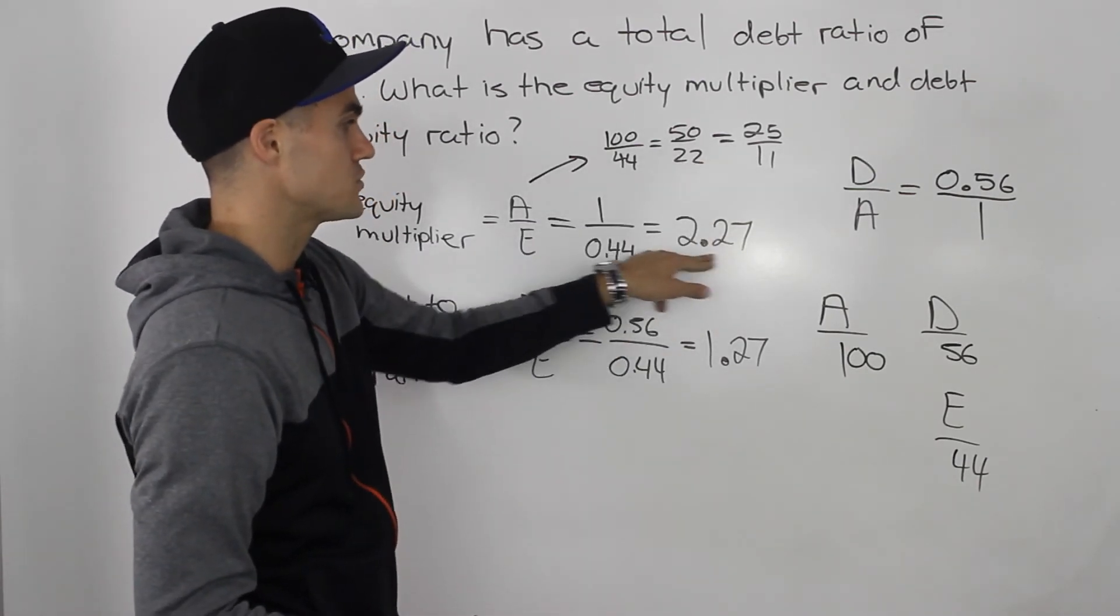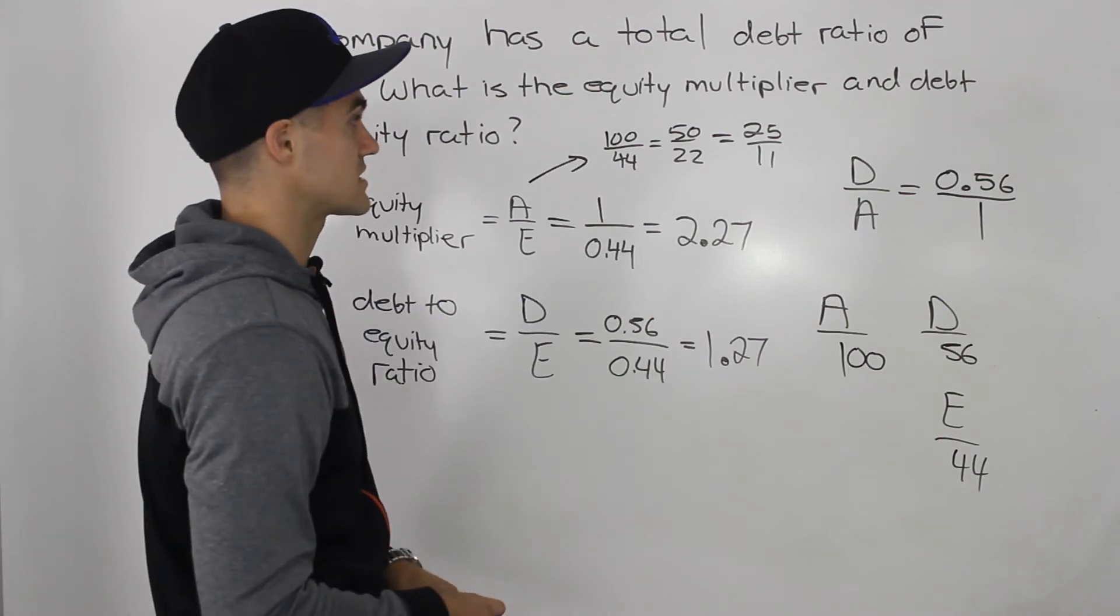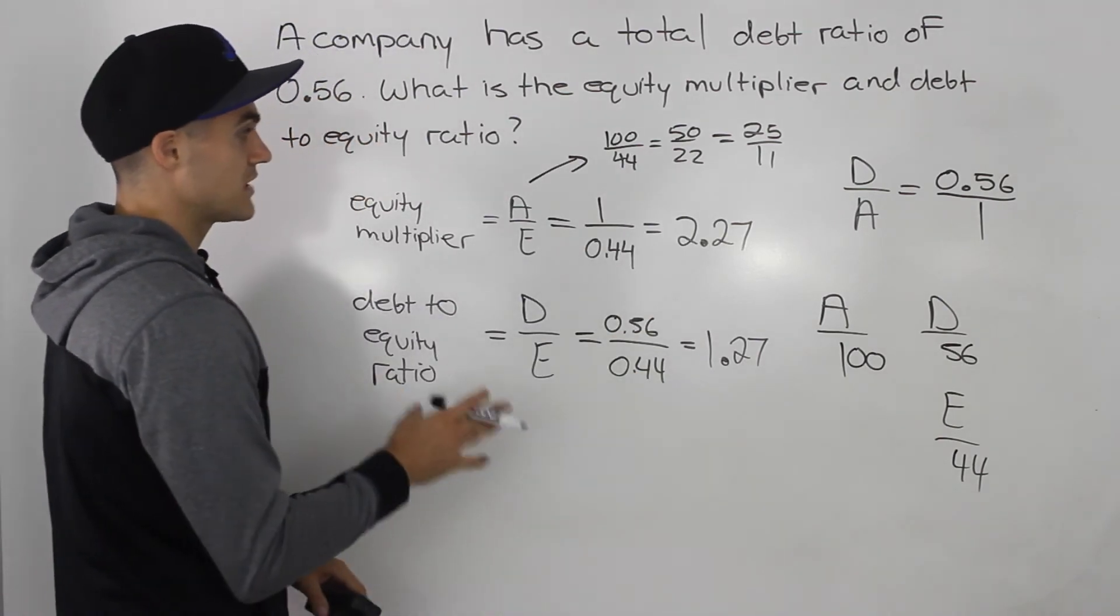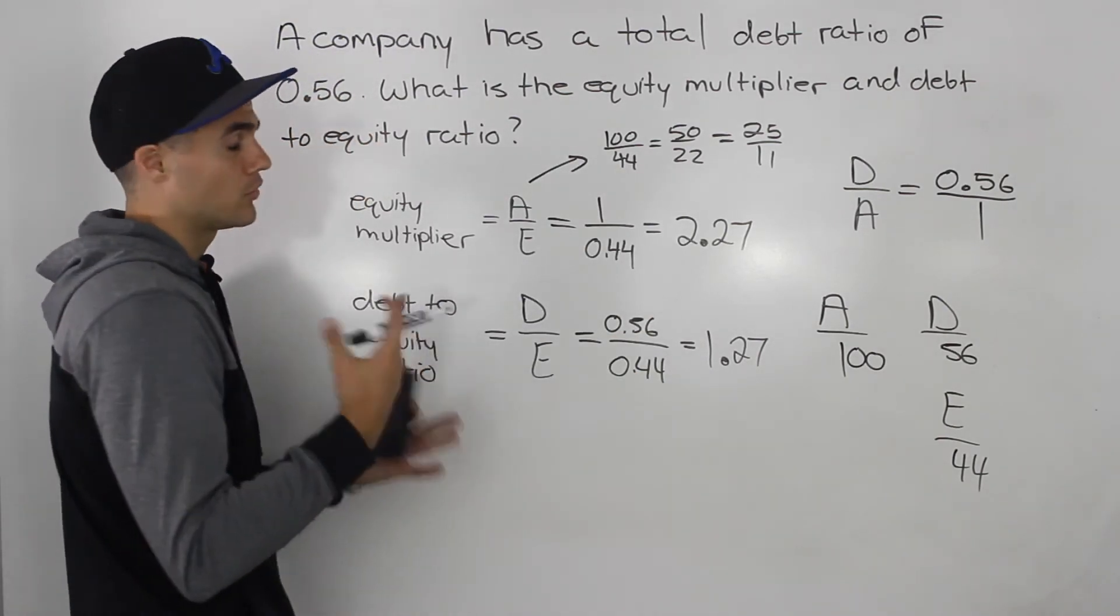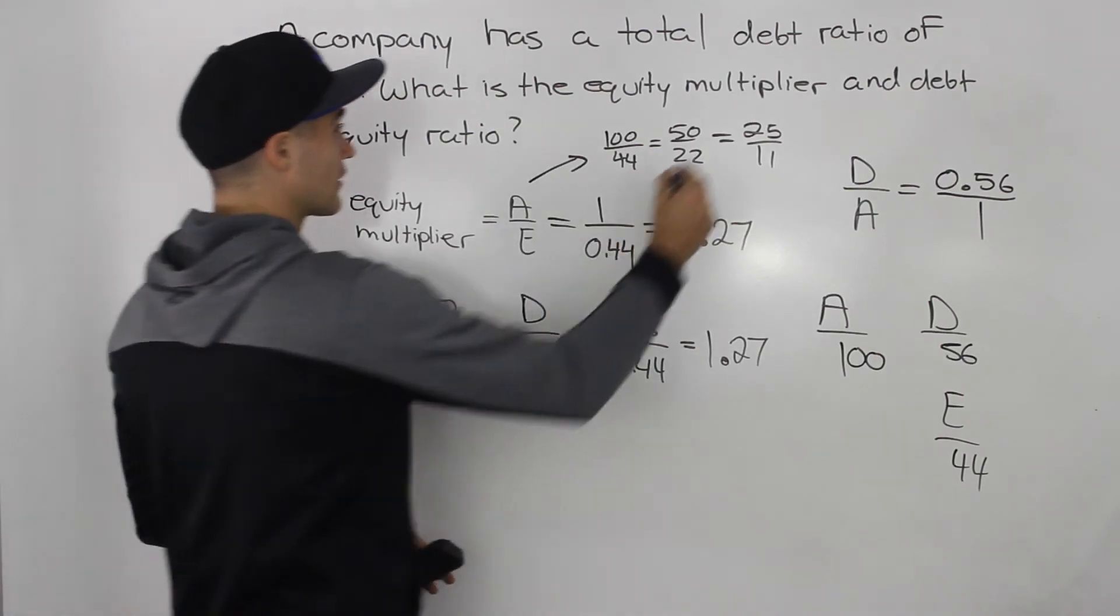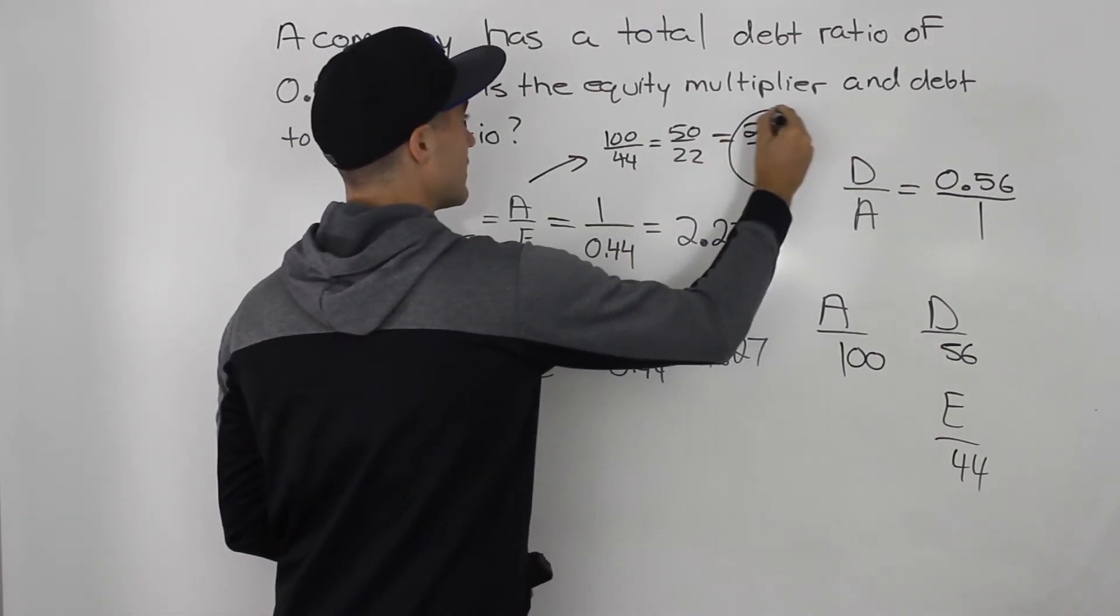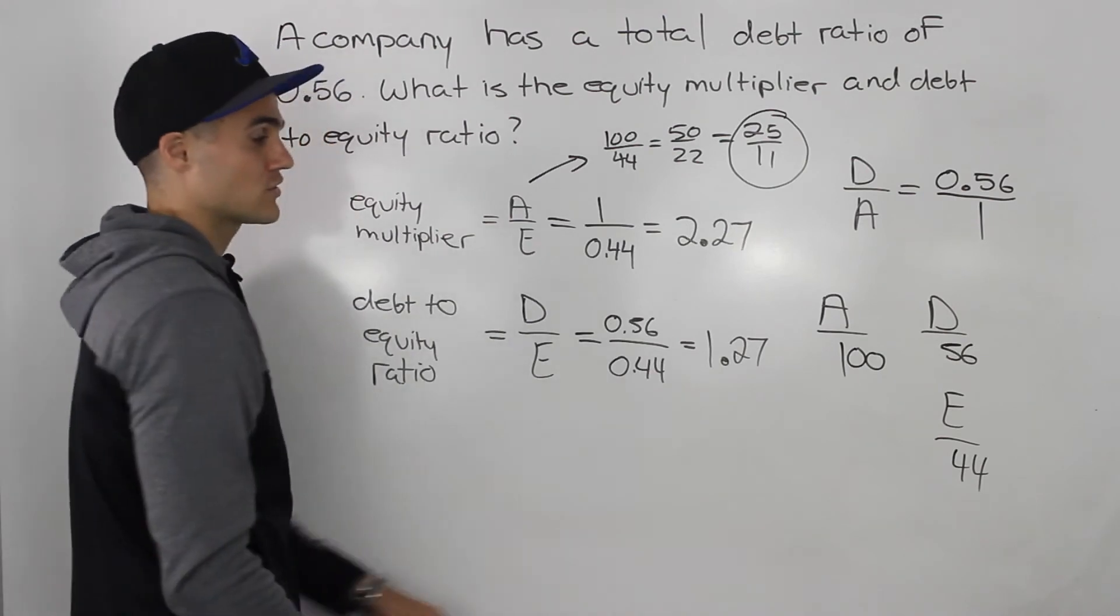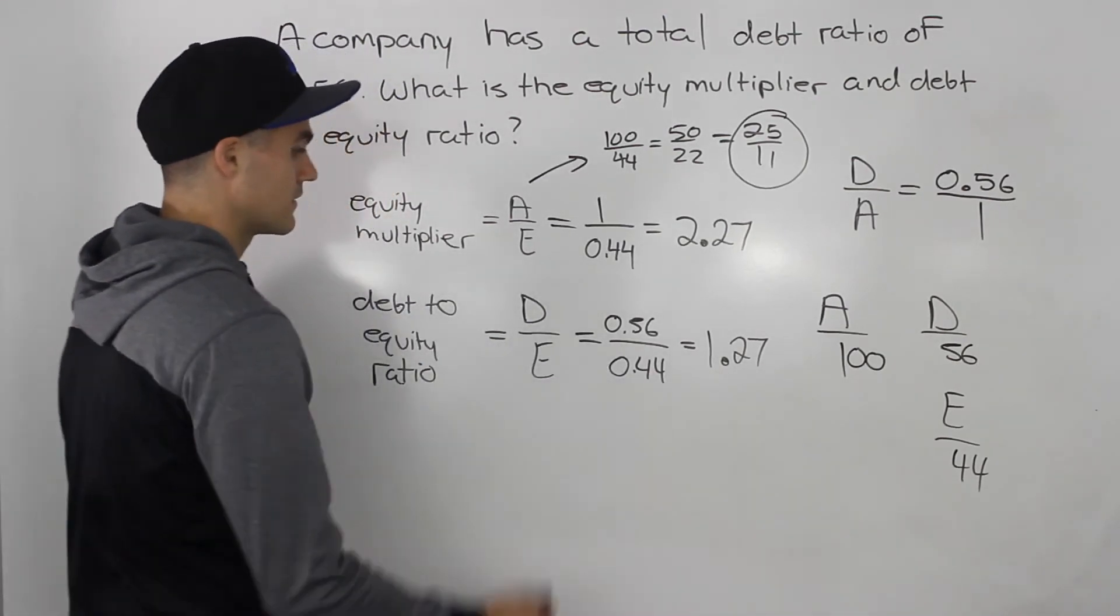So, 25 over 11, 2.27, those are the same thing. So, you got to be careful. Sometimes they'll make the multiple choices a little trickier, and they'll give you these answers. And then you have to use whole numbers for the balance sheet. So, just be aware of that.